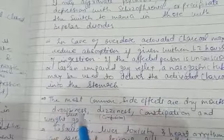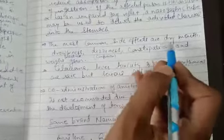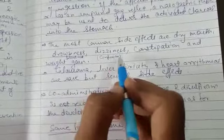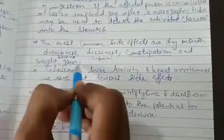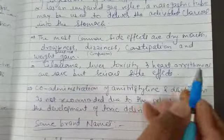The most common side effects are dry mouth, drowsiness and sleepiness, dizziness, constipation, and weight gain. Glaucoma, liver toxicity, and heart arrhythmias are also possible. These are rare but serious side effects.